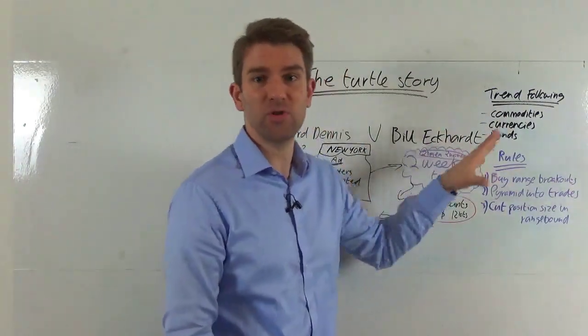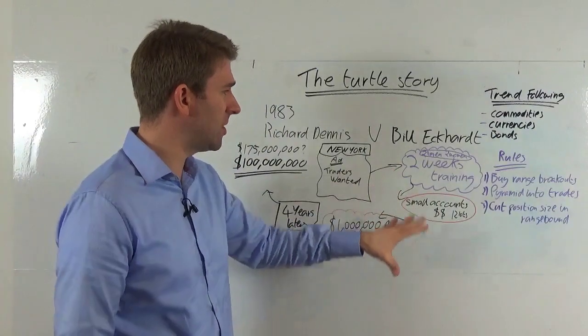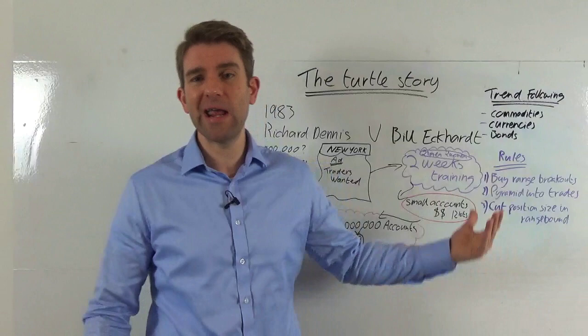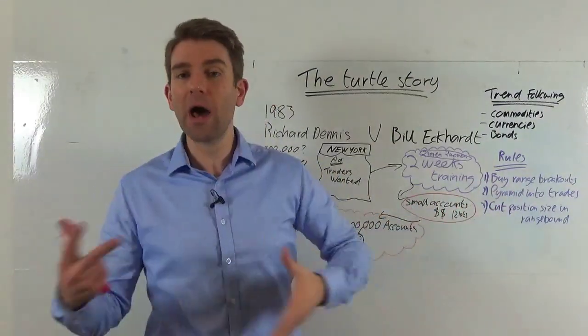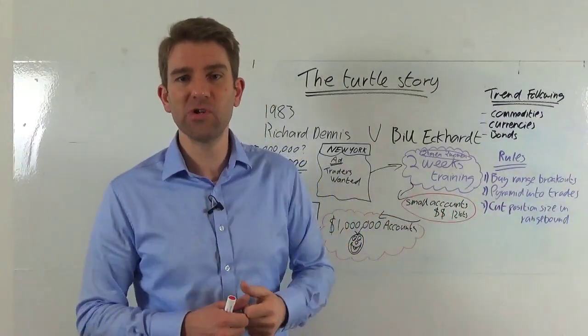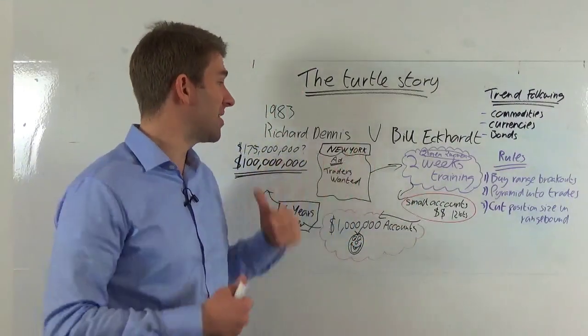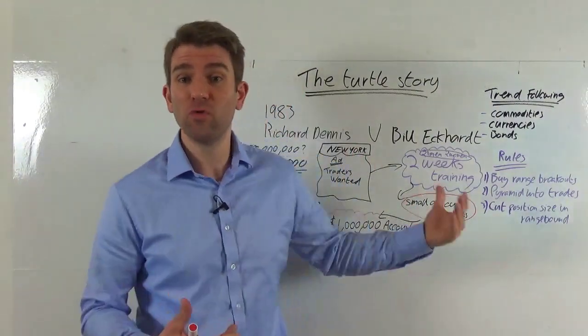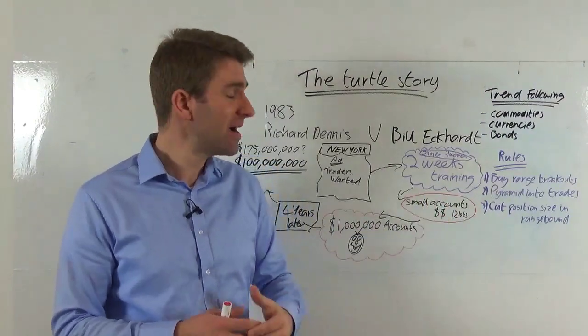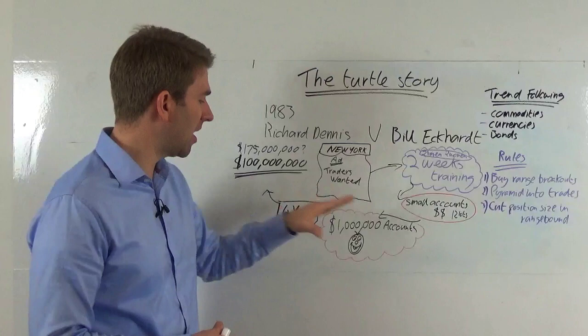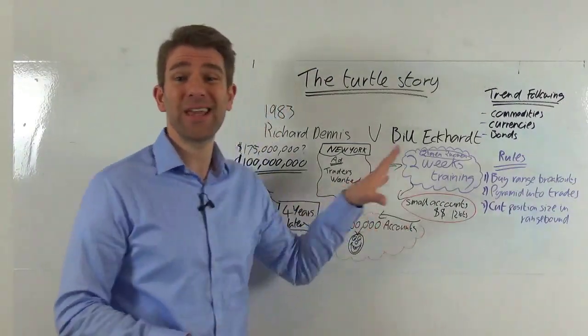Two weeks—these 21 men and 2 women were trained for two weeks on these rules of the strategy. Initially they were given small accounts, 12 lots to trade. Basically they were given small accounts to trade from Richard Dennis's perspective to make sure they followed the rules that they were given in that two-week training. Some of them were then kicked out at that point.